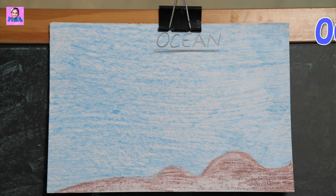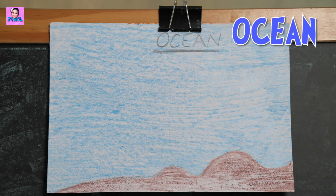Moving on, the last and final one is ocean. Oceans are a large water body which are very vast and surround continents. On earth, all total we have five oceans: Atlantic Ocean, Pacific Ocean, Southern Ocean, Indian Ocean, and Arctic Ocean.